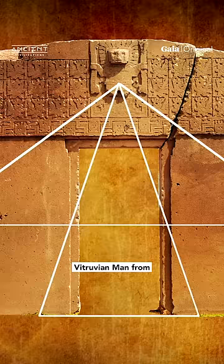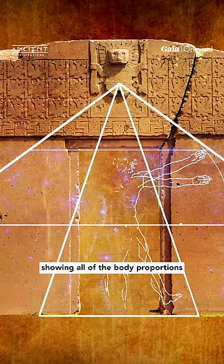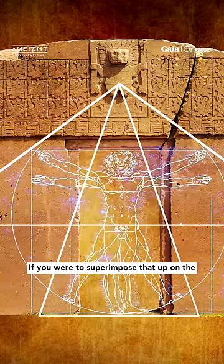where you see with his arms outstretched and his legs showing all of the body proportions and the phi ratio proportions of sacred geometry, if you were to superimpose that upon this particular monument,